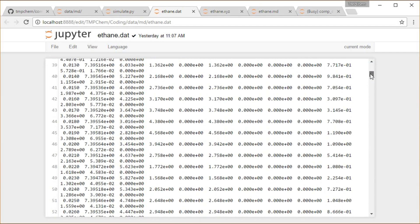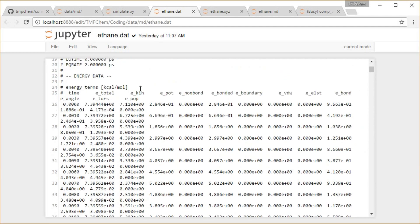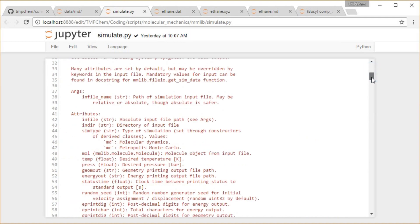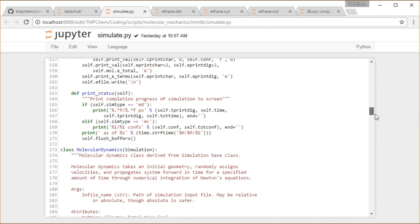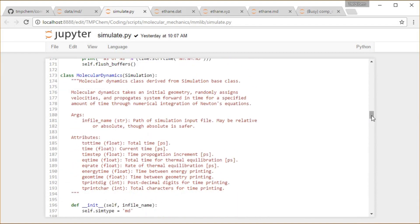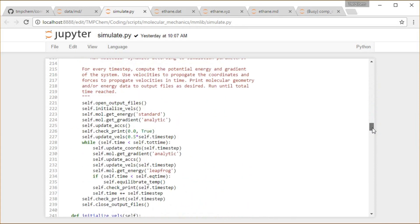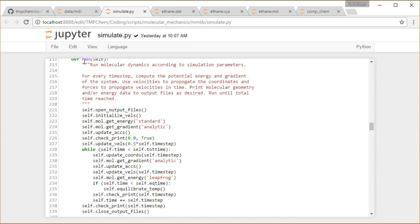And then various columns of energy components. Total, kinetic, potential, non-bonded, bonded, boundary, van der Waals, electrostatic, bond, angle, torsion, out of plane. And then inside this simulate.py module is really where the action is going on in terms of that stuff, the molecular dynamics class. And the real magic occurs in this run function where I have, basically, here's the loop where I'm doing update the coordinates, get the gradient, velocities, update those, and then check to print everything out.